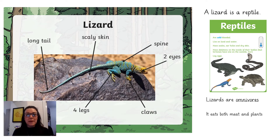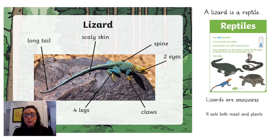Here is a lizard. Some people keep lizards as pets at home, but lizards are also wild animals. They have four legs, claws, two eyes, a spine, scaly skin and a long tail. A lizard is a reptile which means it can live on both land and water. They have scales so their skin is quite dry. Lizards also lay eggs. Lizards eat a variety of spiders, worms, beetles but also fruit and vegetables, which makes a lizard an omnivore.